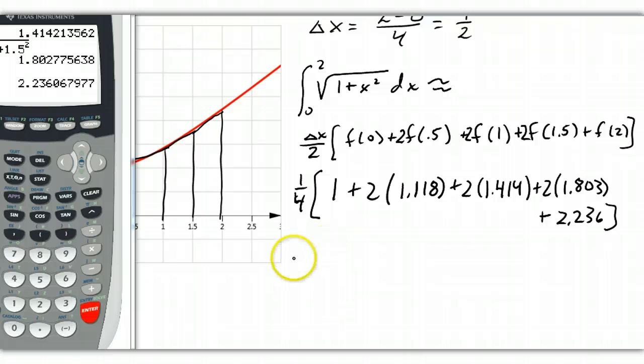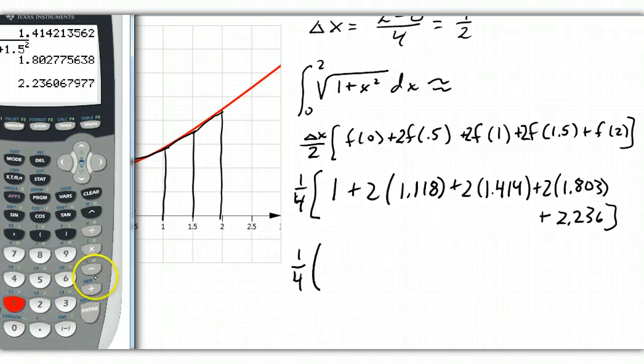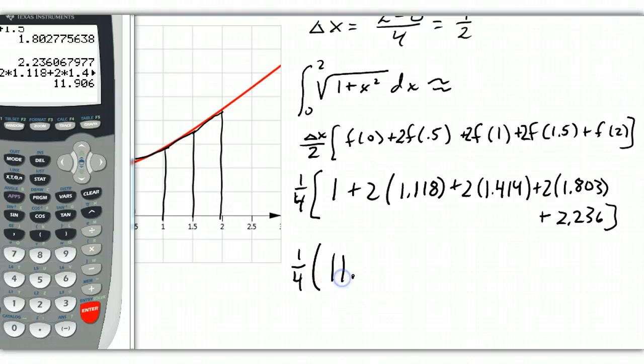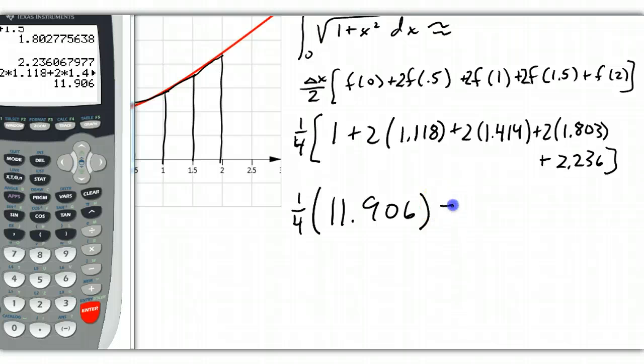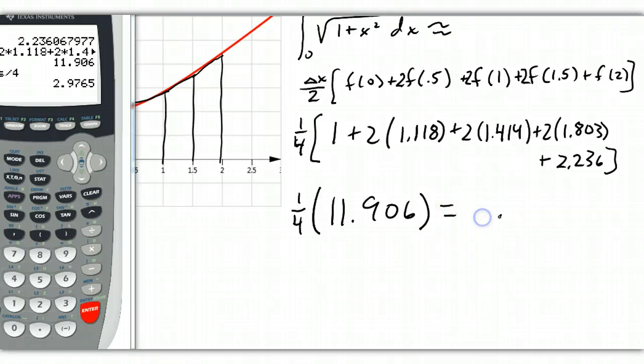Okay, so let's add all this stuff up. So I have 1 fourth, so that's going to be 1 plus 2 times 1.118 plus 2 times 1.414 plus 2 times 1.803 plus 2.236, and we get 11.906. When we divide that answer by 4, we get that the area is about 2.9765.